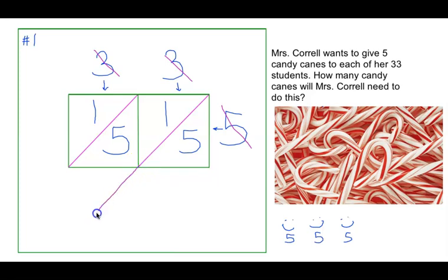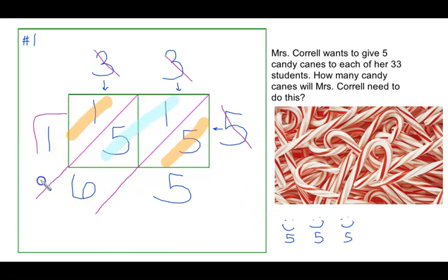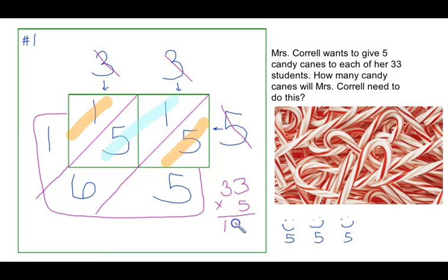I'm going to extend my diagonal lines just a little ways. We're looking at each diagonal column. In this diagonal column, I have five. In the next diagonal column, I have a five and a one — five plus one gives me six. In the last diagonal column, I have one, so I put a one there. Now look at the outside of our rectangle: I have 165. One hundred sixty-five — that is our answer to 33 times 5.